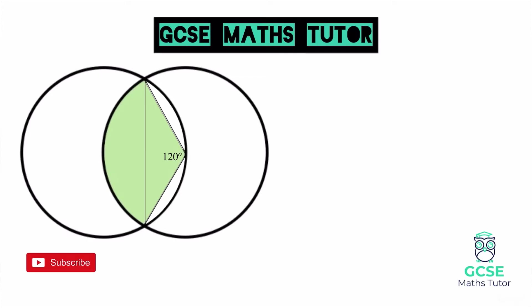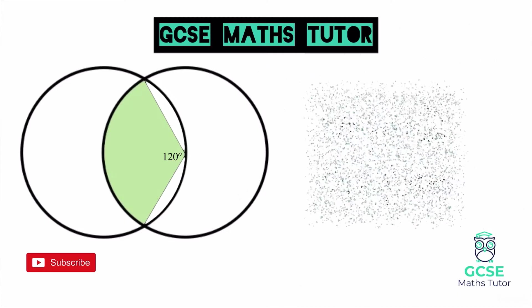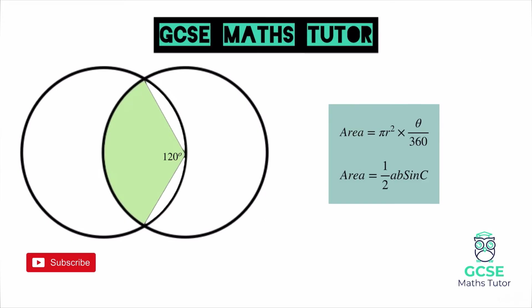We can also look at this triangle. Using the two lengths there, we could use a bit of trigonometry to work out the area of this triangle, and that would give us half of the shaded area — the area of that big segment on the left. The GCSE formulas you need are now shown on the screen: the top formula is the area of a sector, and the bottom formula is for the area of a triangle using sine. If you think you can have a go, pause the video and try it.